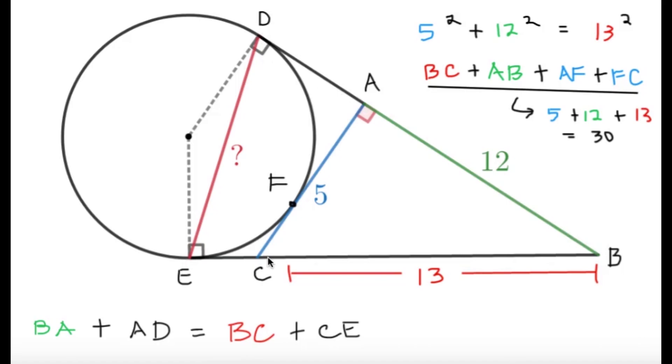Alright, the second thing we can observe is that DB and EB, they are tangents from point B. So BD should be equal to BE.